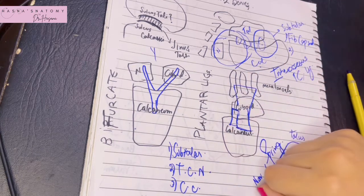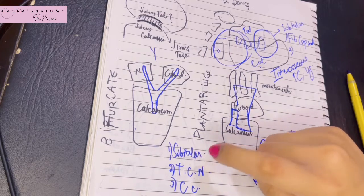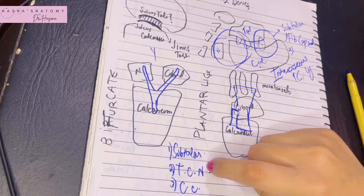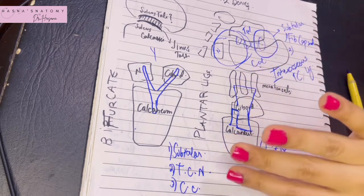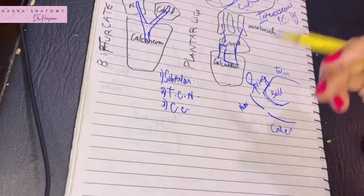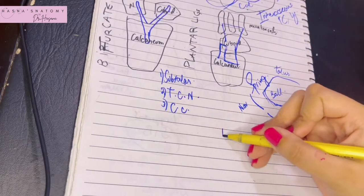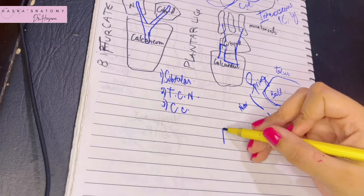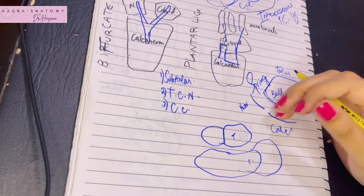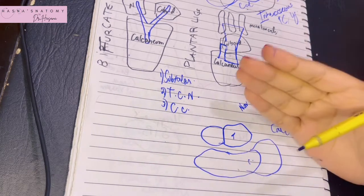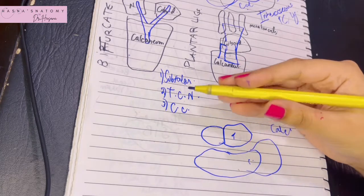What are the movements that occur at these joints? The subtalar permits the most important movements in the foot: inversion and eversion. It is necessary to know the axis of this movement. The axis of inversion and eversion is an oblique axis that runs upwards, forwards, and medially.